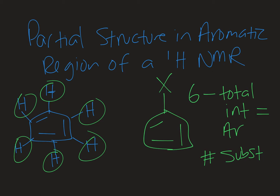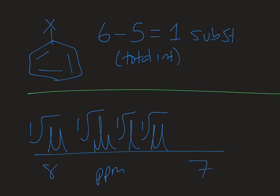So let's go to the next slide and we'll draw a few examples. So if we look at the top of this slide, we have X, some generic substituent on there, that would give me five protons. So if my aromatic region was integrated, I'd have a total of five, so six minus five is one. There's my one substituent.